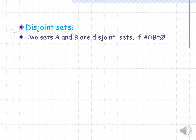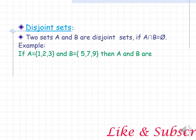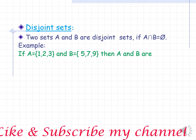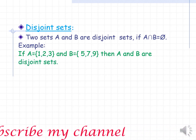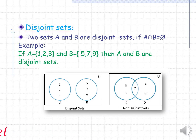Disjoint sets. Two sets A and B are disjoint sets if A ∩ B = ∅. For example, if A = {1, 2, 3} and B = {5, 7, 9}, then A and B are disjoint sets because there is no common element between A and B.